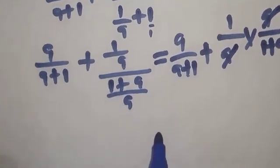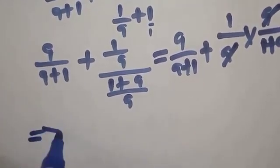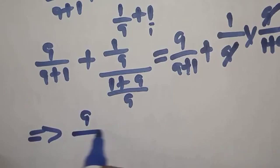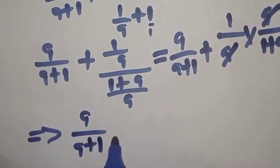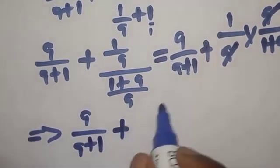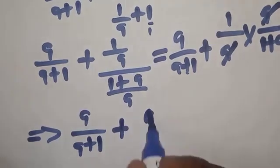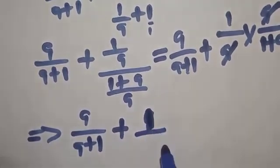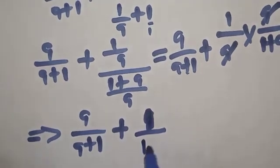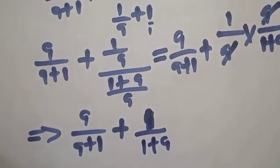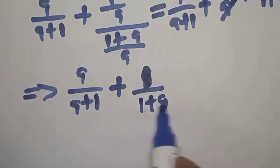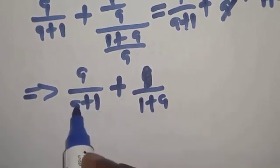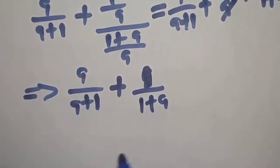Then we have this imply that a over a plus 1 plus 1 all over, this is 1, 1 over what? 1 plus a. Now from here, let's find our LCM. Now what is the LCM? We have the common is a plus 1 and 1 plus a is same thing. We have a plus 1 over.